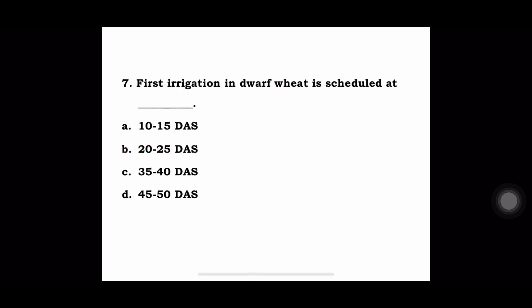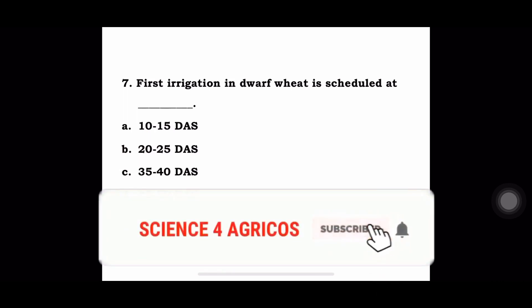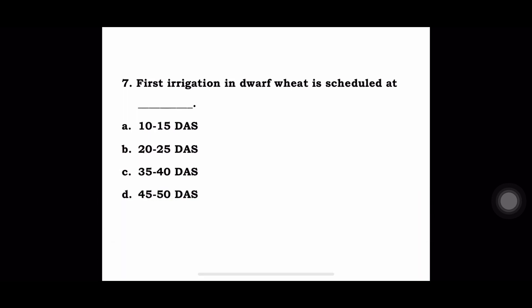Next question: first irrigation in dwarf wheat is scheduled at a) 10-15 days after sowing, b) 20-25 days after sowing, c) 35-40 days after sowing, d) 45-50 days after sowing. The answer is 20-25 days after sowing, the first irrigation should be given in dwarf wheat.